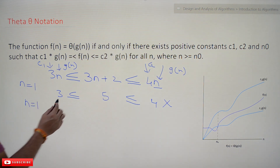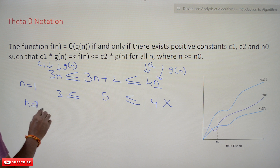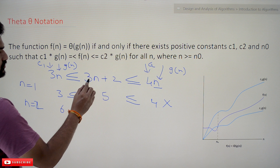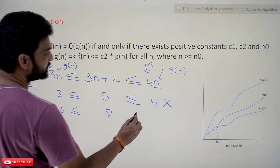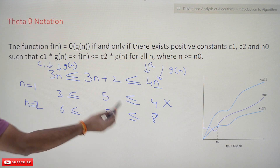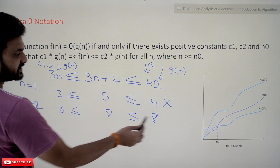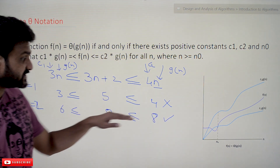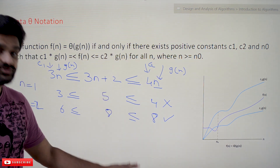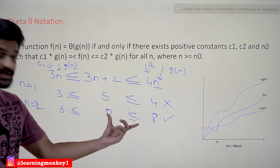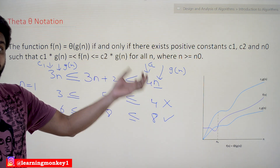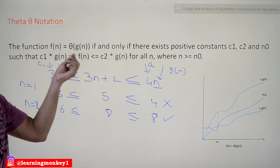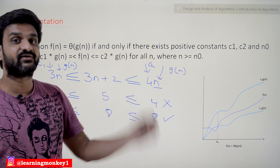If we take n equal to 2: c1·g(n) is 3×2 equals 6, f of n is 6 plus 2 equals 8, and c2·g(n) is 4×2 equals 8. Is it true? Yes — 8 is greater than or equal to 6 and 8 is less than or equal to 8. So this is true. We have to check that for all values of n greater than or equal to this n0, the entire equation should be true. If that happens to be true for all values of n, then we can say that f of n can be described in theta notation.